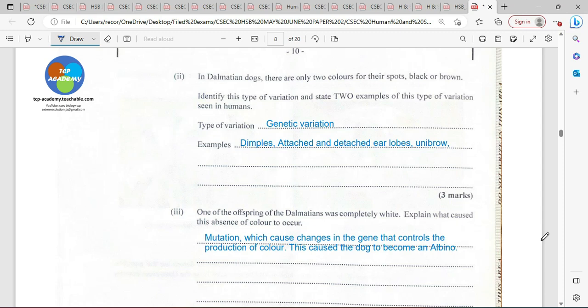One of the offspring of a Dalmatian was completely white. Explain what caused this absence of color. We're seeing some clues here. Completely white, absence of color. That tells us about albinism.